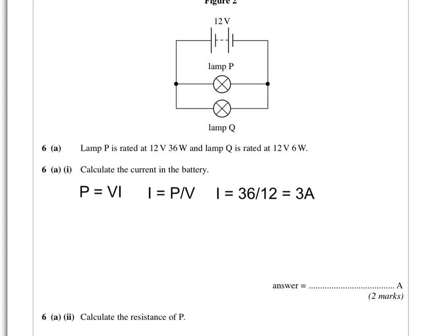If we take lamp P to start with, lamp P has a power of 36 watts and voltage of 12 volts. Current equals power divided by voltage, so 36 divided by 12. That means lamp P, when it's working normally, takes a current of 3 amps.